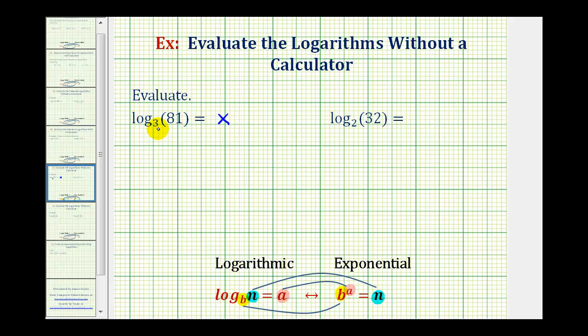So here we have 3 raised to the power of x must equal 81. So 3 to the power of x must equal 81. And now we'll solve for x. We can do this without the use of a calculator because we can write 81 as 3 raised to a power.